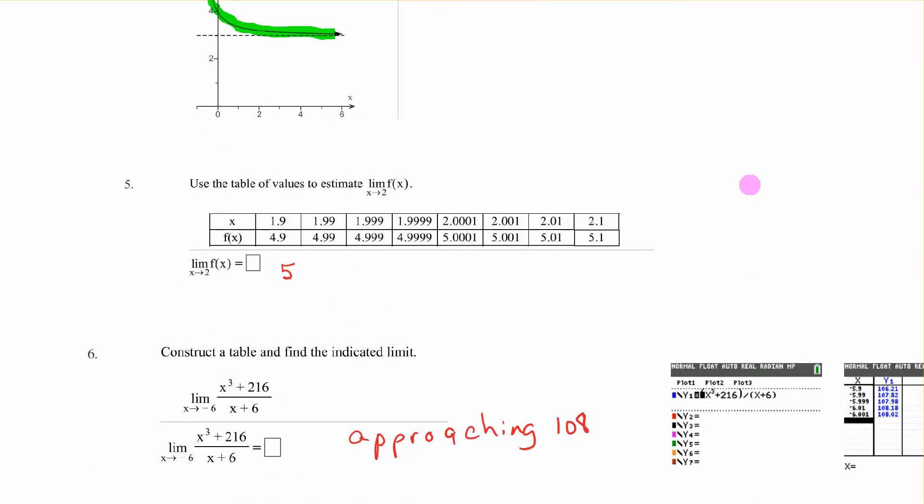Use the table to estimate the limit as x approaches 2. So as we come in this way, we come in this way, we're coming towards 2. What are we approaching? 4.999, 5.0001, we're approaching 5.